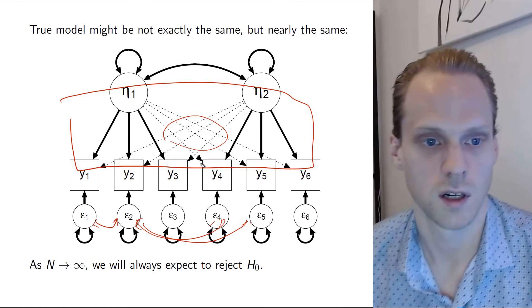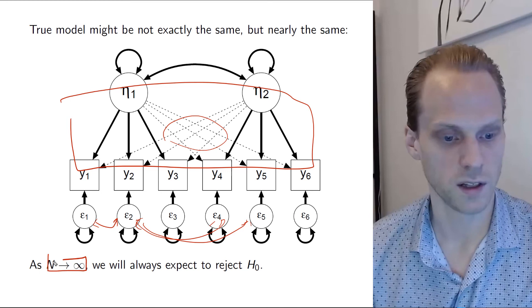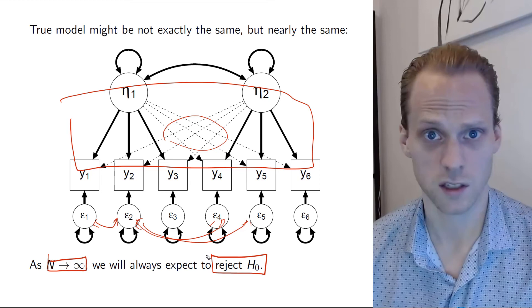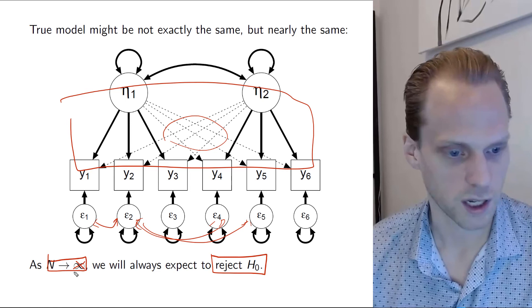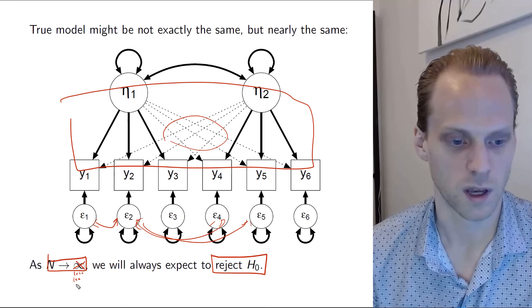Alright, so you should expect that chi-square will be significant. So as n goes to infinity, we should expect to reject the hypothesis here and to get a significant chi-square. And infinity actually here is not that high. You should already expect this to be like a thousand, or maybe sometimes even a hundred. Like it happens quite fast. You'll get a significant effect here.